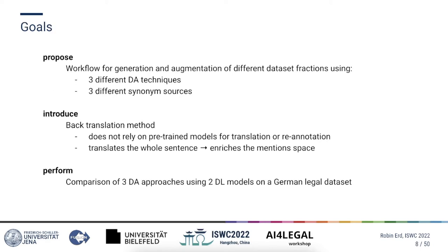Our goal is to evaluate and compare different data augmentation techniques for the named entity recognition task, explicitly focusing on the German legal domain and thus using the German legal entity recognition dataset. The key contributions of this paper are: first, to propose a workflow for the generation and augmentation of different dataset fractions using three different data augmentation techniques along with three different synonym sources; second, to introduce a back translation method that does not rely on pre-trained models for translation or re-annotation and translates the whole sentence including entities, thereby enriching dimension space; and the evaluation and comparison of the effectiveness of the selected approaches using two deep learning models on a German legal dataset.